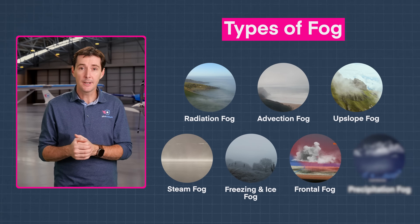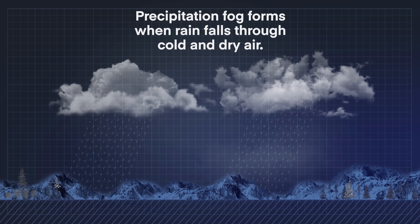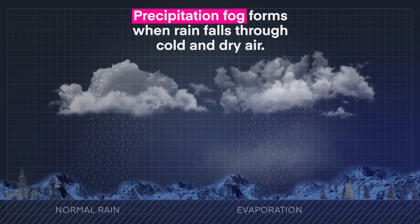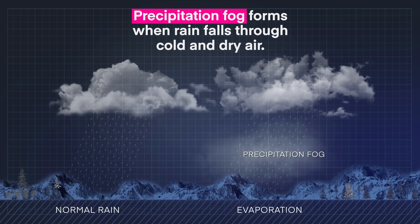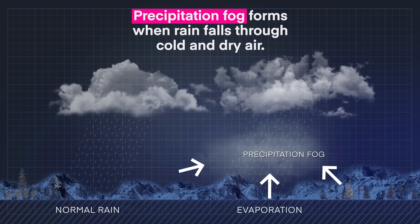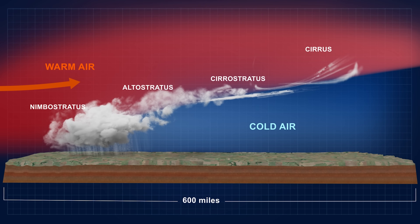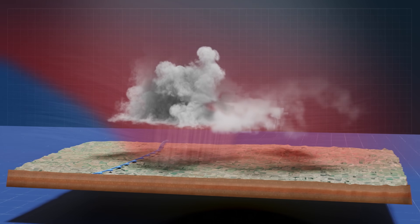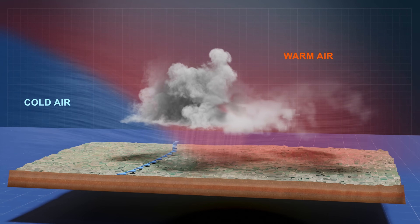The last type of fog you may encounter is called precipitation fog. This type of fog forms when rain falls through a cold and dry air mass. The increased moisture leads to an increase in dew points, causing saturation and the formation of fog. Precipitation fog is associated with a warm front and can also result from a slower-moving cold front.